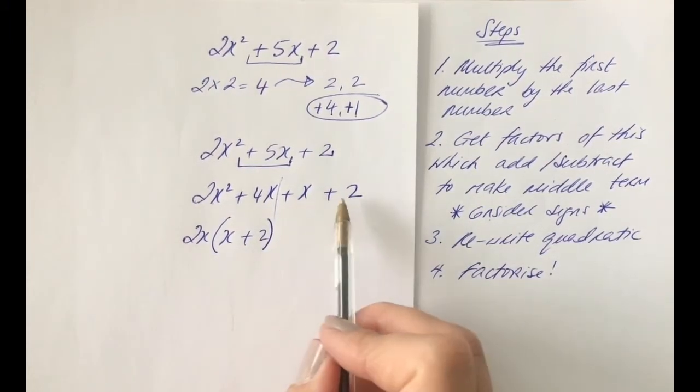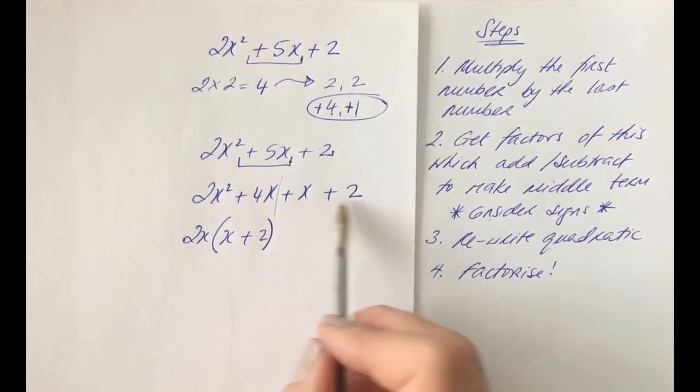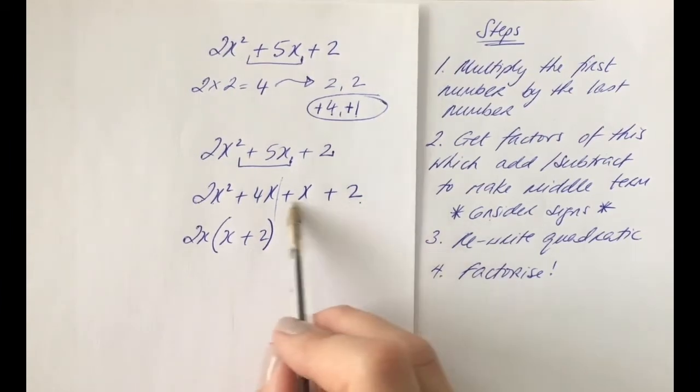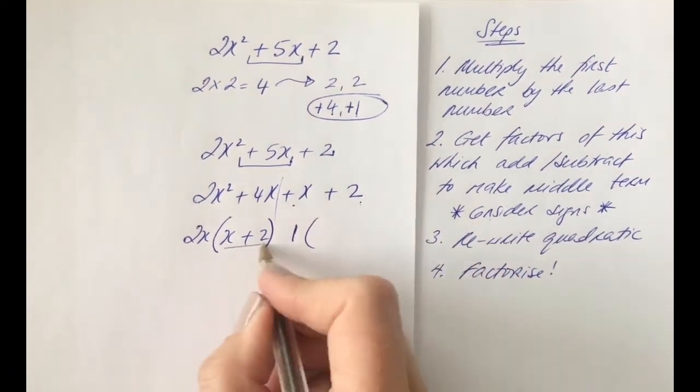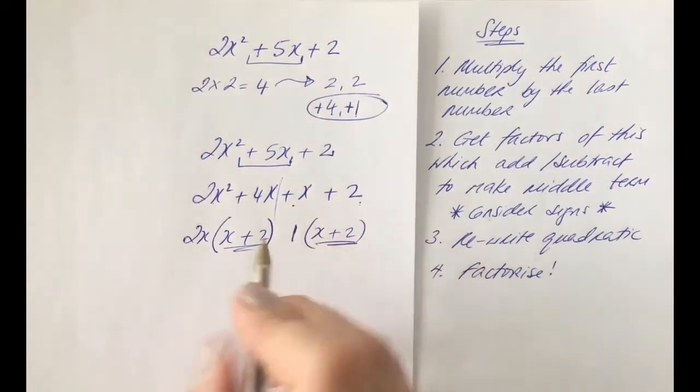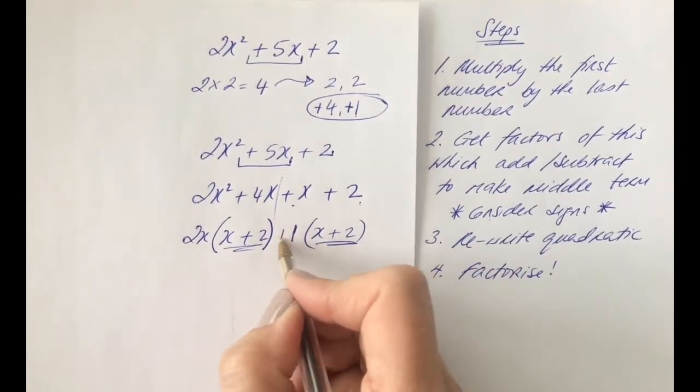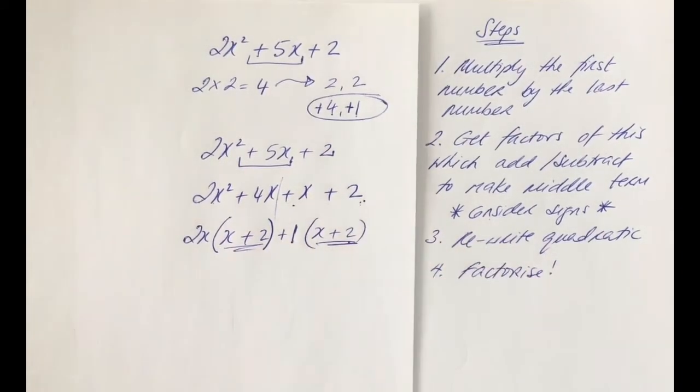And then looking at the second pair, between x and 2, the common factor, well, nothing is jumping out here. So the thing that you can always pull out, common to both, would be 1. And of course, we know the brackets should be the same. So x plus 2. Let's check that this works. 1 times x. We need a positive 1 here. And 1 times 2 is 2. So yes, we are getting these terms back again.